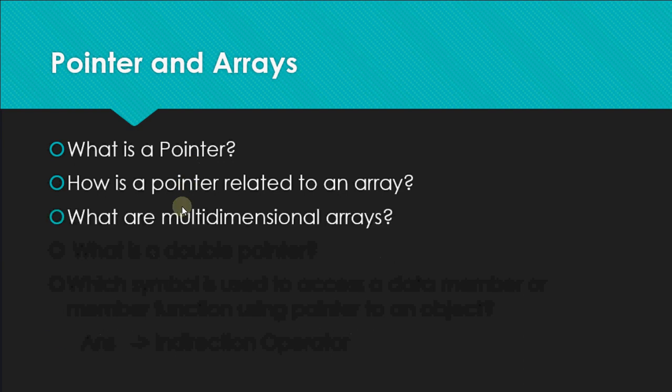What are multidimensional arrays? When we have more than one dimension in an array, it's called multidimensional. We can have a 2D array — for example, a 2D array of size 3×5 represents a matrix of size 3×5. We can also have 3D arrays; for instance, an array of 3×4×5 means 3 matrices each of size 4×5.